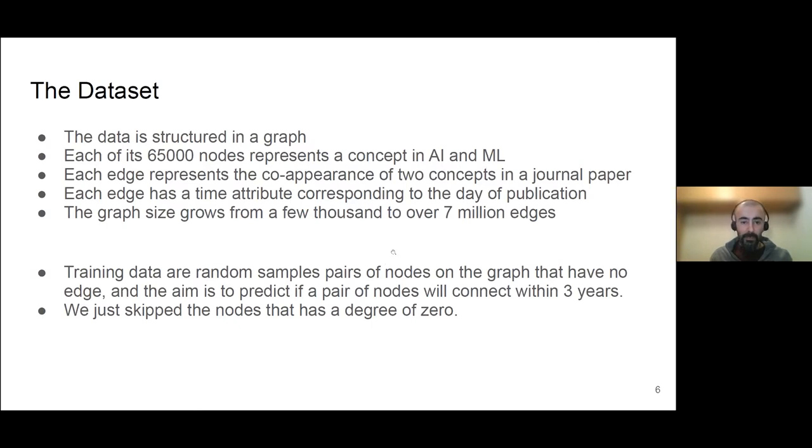The dataset, very briefly, it has 65,000 nodes and finally reached 7 million edges. How it's sampled from this dataset, we try to just sample randomly because it's very unbalanced, that there are just a few positive cases. We might just up sample it to have more positive samples for training. And also, there was a method for skipping some of the nodes that have very small degree. I used the cutoff degree of 1, so I just skipped the nodes with degree of 0.